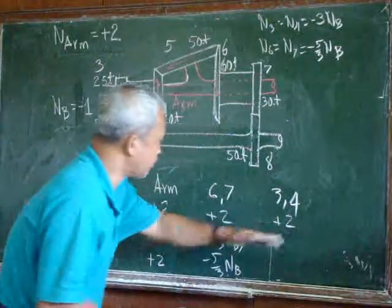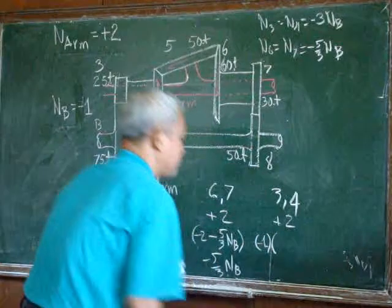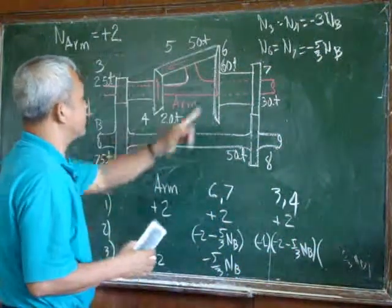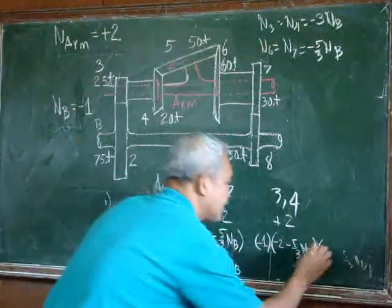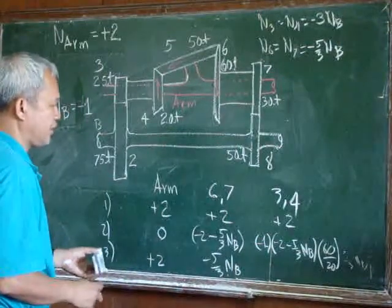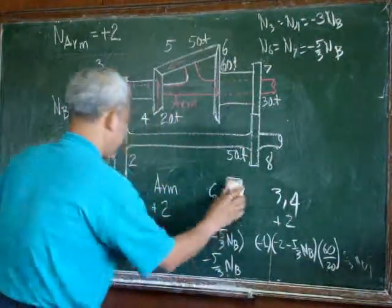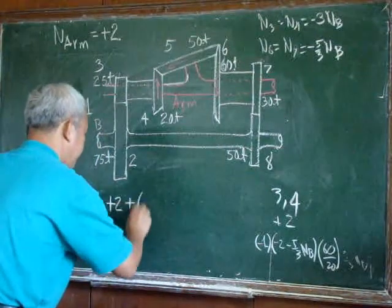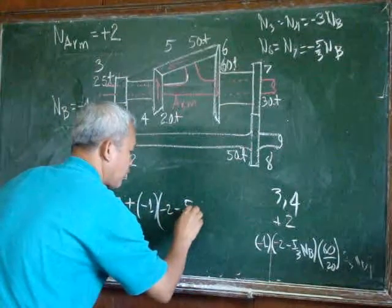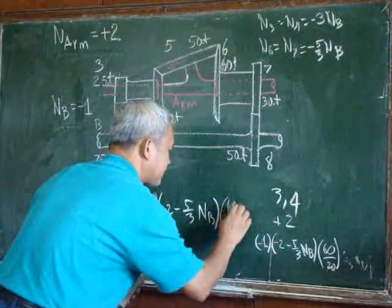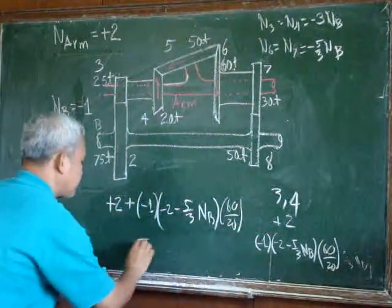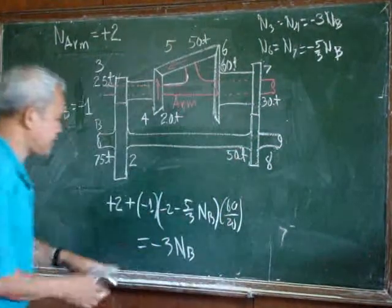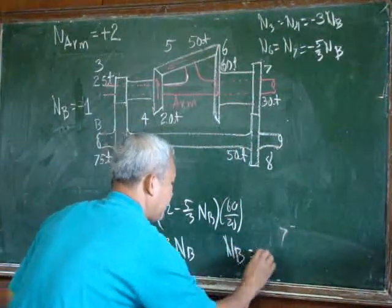Proceeding to the other column, it will be negative one multiplied by negative two minus five over three NB, multiplied by 60 over 20. The resultant: plus two, plus negative one times negative two minus five over three NB, multiplied by 60 over 20, must be equal to negative three NB. This must give us NB equal to negative one, confirming our earlier result.